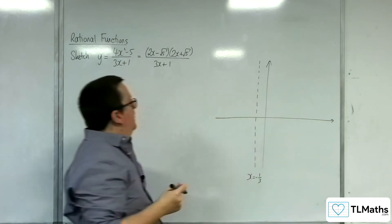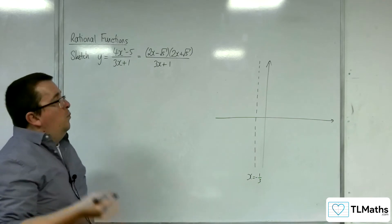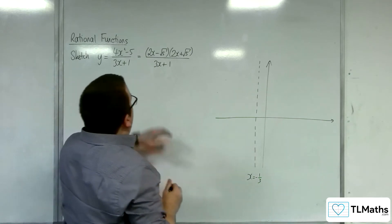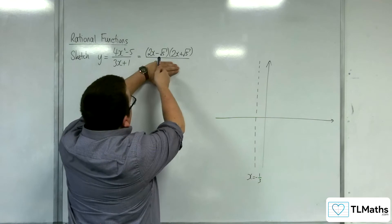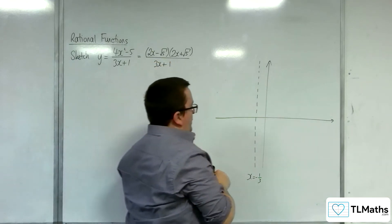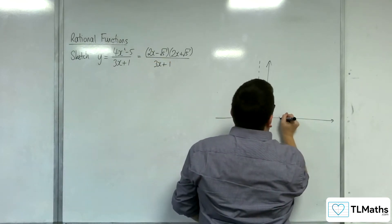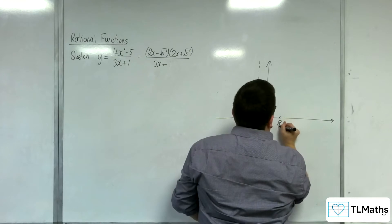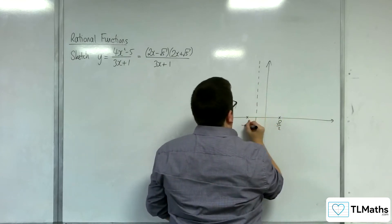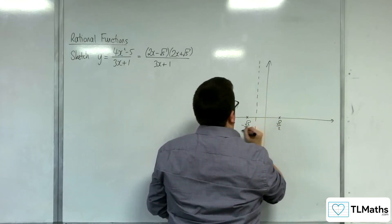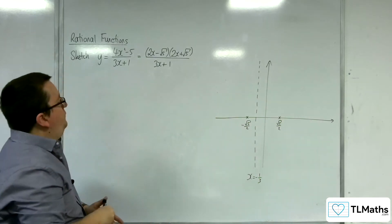Right, then where is it crossing the x-axis? That's when the numerator is zero. So that will be at root 5 over 2 and minus root 5 over 2. So root 5 over 2 and minus root 5 over 2.